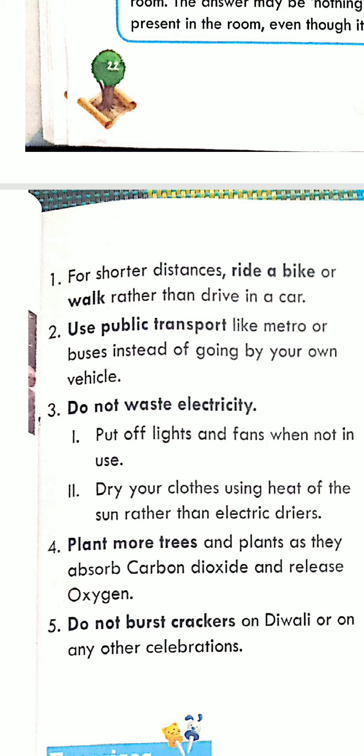The next one is: use public transport like metro or buses instead of going by your own vehicle. If 10 people all travel by their own cars or bikes, then 10 vehicles are used and an equal amount of smoke is emitted. But if 10 people use one vehicle — whether public transport or a carpool — then 10 vehicles are reduced to 1. So by using public transport, you can reduce pollution significantly.